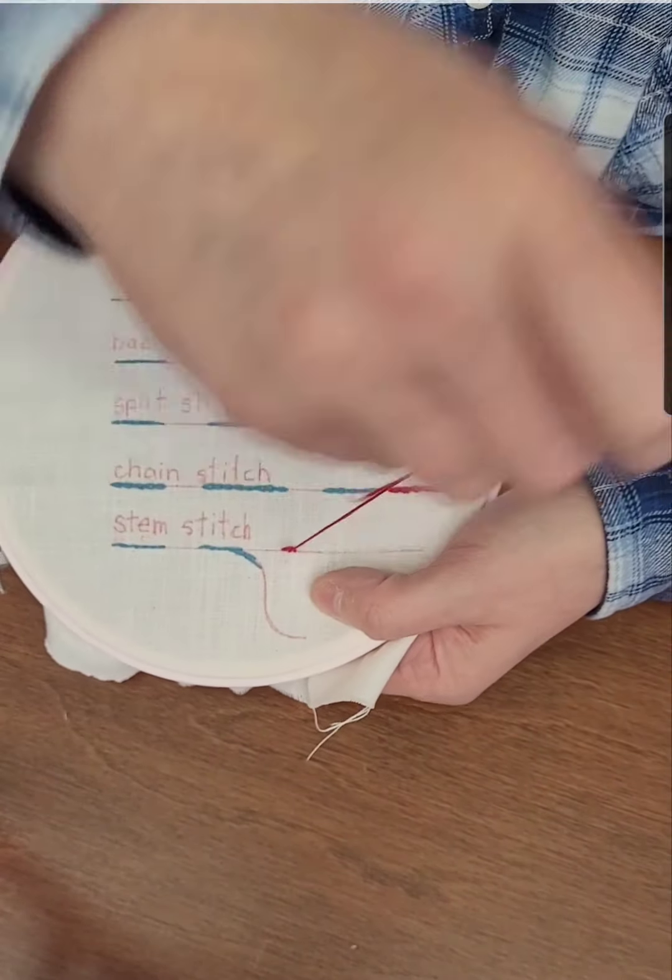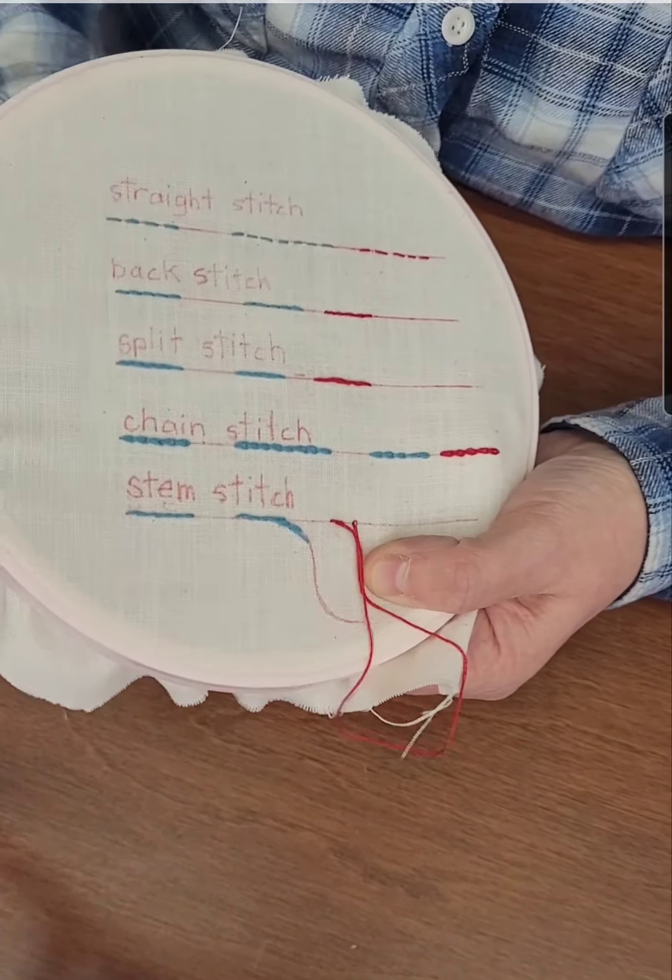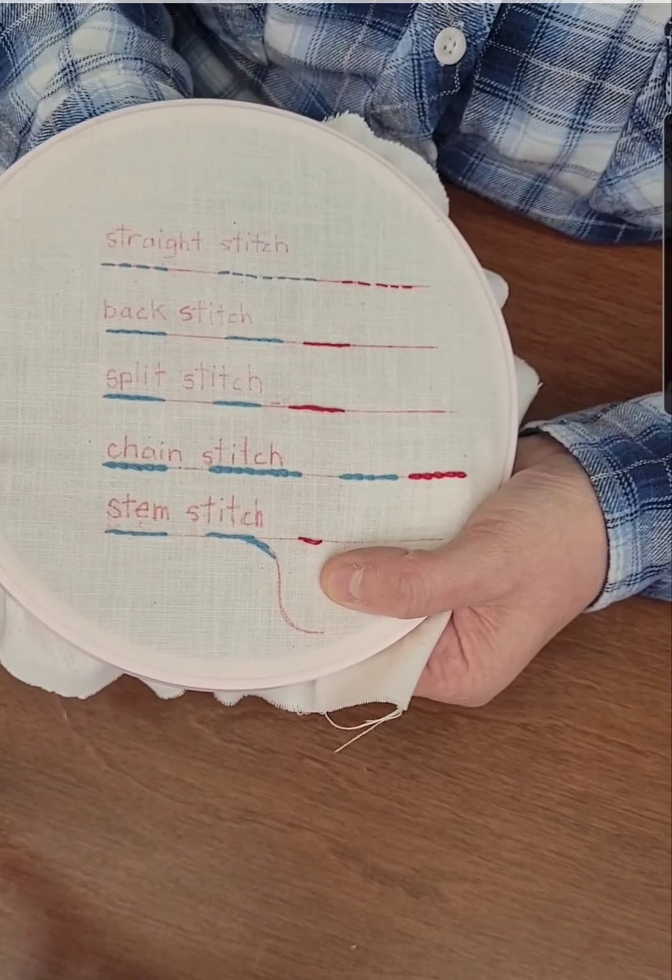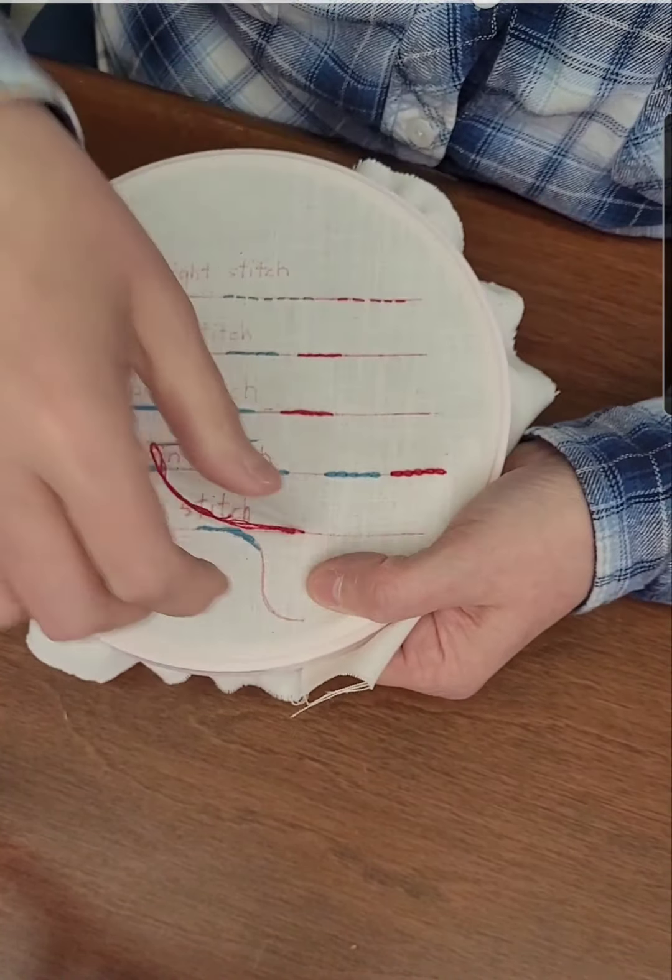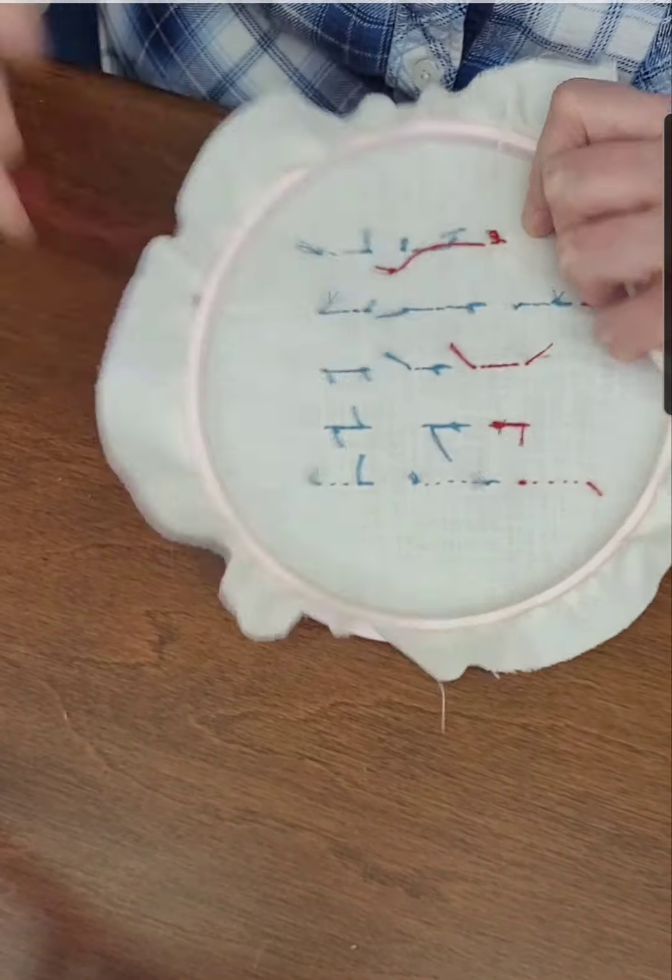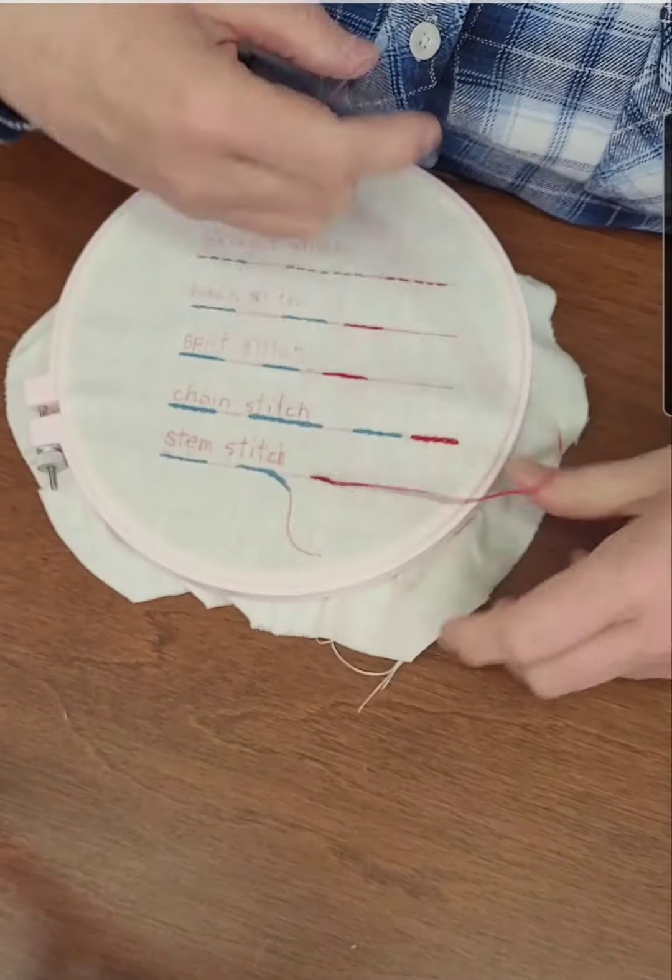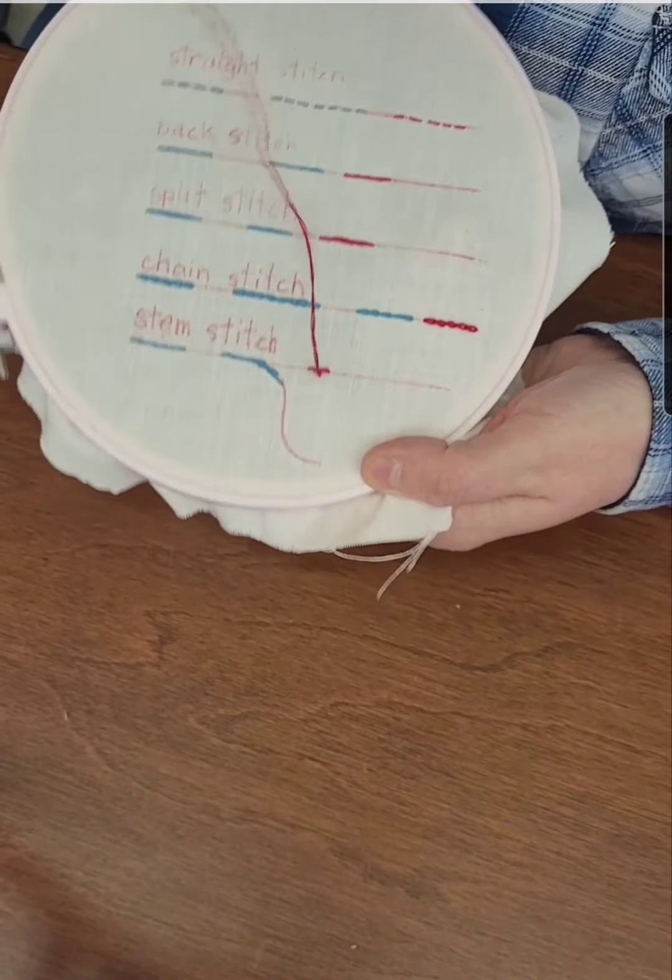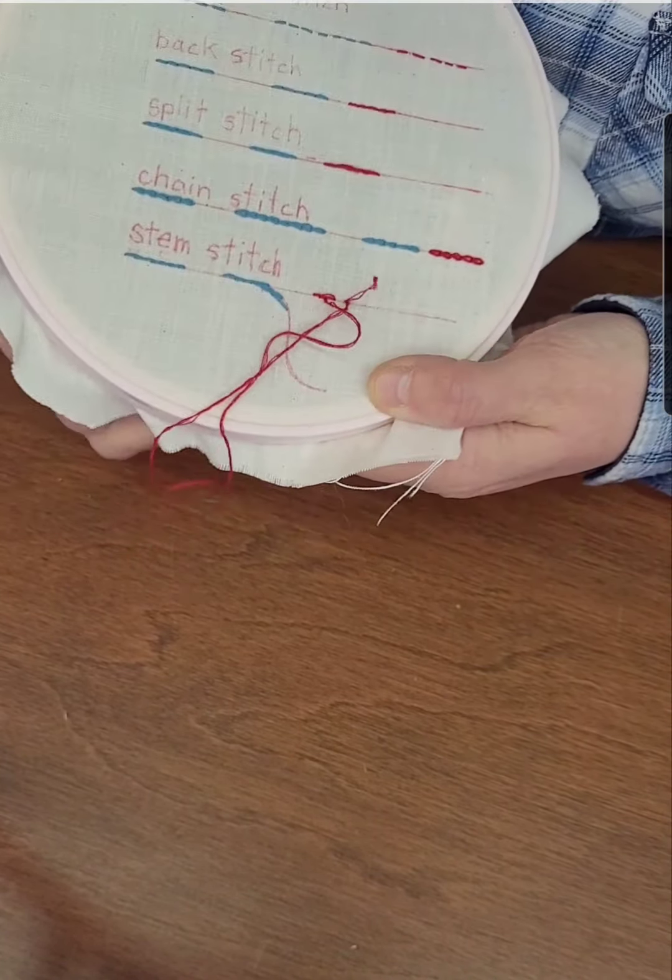And then you're going to come up from the bottom underneath the stitches in the center of your last stitch. I got a little loop on the back so I'm trying to fix that up, straighten the threads up. So there we go. So we're going to go forward, down, pulling the thread down underneath.